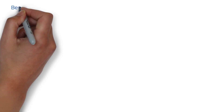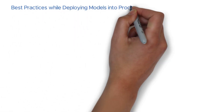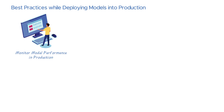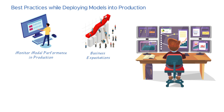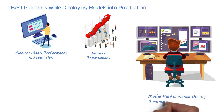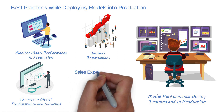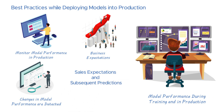Best practices while deploying models into production: monitor model performance in production and compare to business expectations; monitor differences between model performance during training and in production. When changes in model performance are detected, retrain the model. For example, sales expectations and subsequent predictions may change due to new competition.